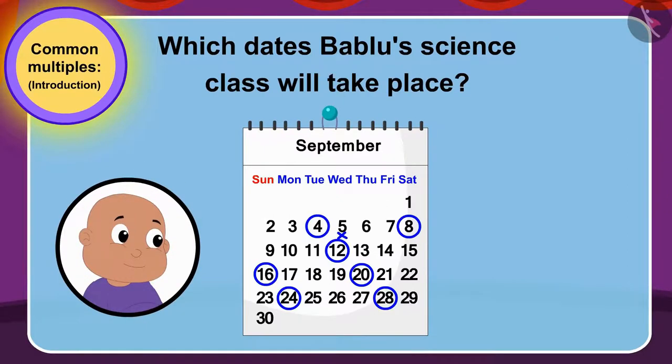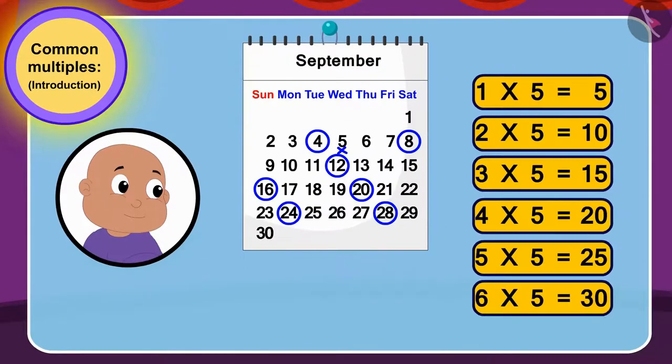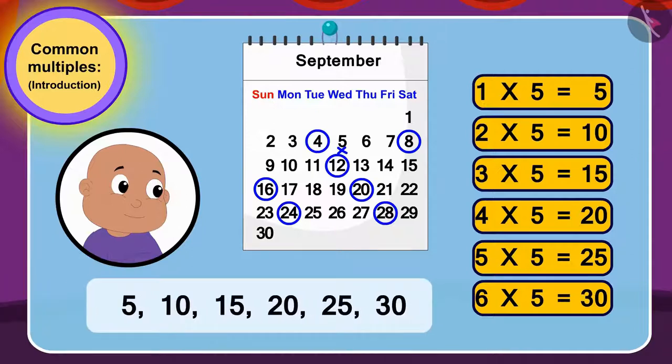Well done children, your answer is absolutely correct. We can find multiples of five by using tables of five. Bablu will go to science class on five, ten, fifteen, twenty, twenty-five, and thirty.